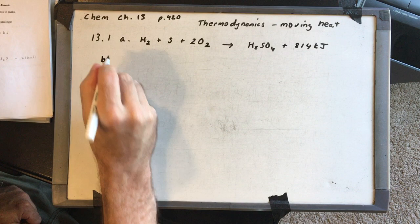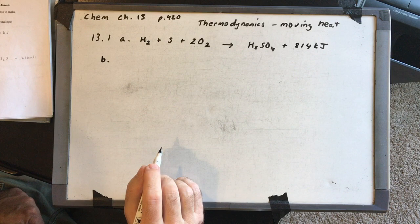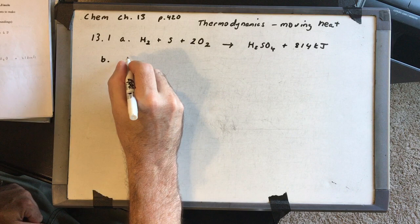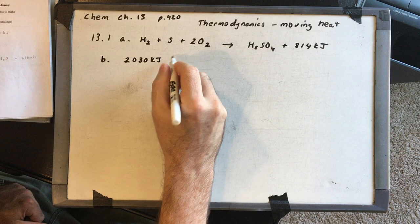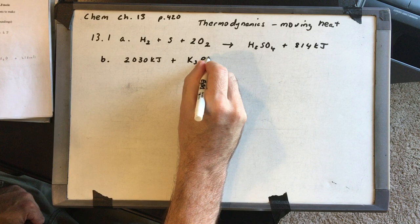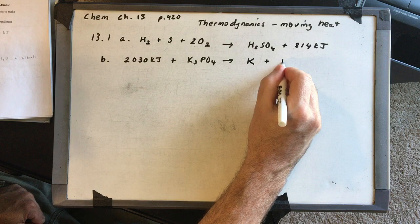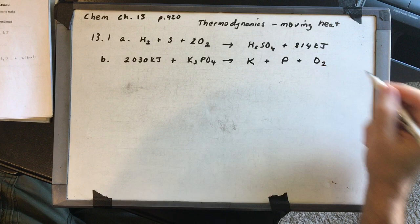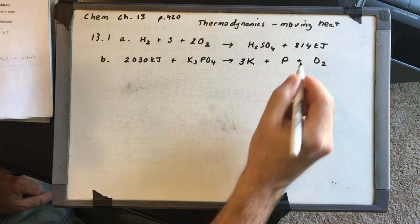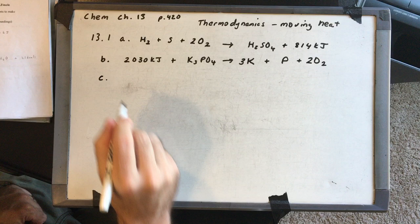Part B is the decomposition of K3PO4 and delta H is positive 2030 kilojoules. If delta H is positive, energy is a reactant, so we put 2030 kilojoules on the left side. K3PO4 decomposes into its constituent elements: potassium (not a homonuclear diatomic), phosphorus (also not homonuclear diatomic), and oxygen written as O2. Balancing gives us a 3 in front of potassium and a 2 in front of O2.